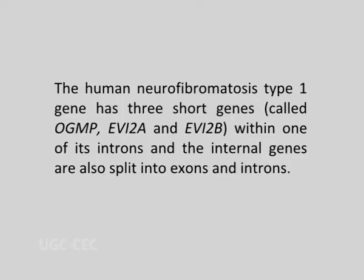For example, the human neurofibromatosis type 1 gene has three short genes called OGMP, EVI2A and EVI2B within one of its introns, and these internal genes are also split into exons and introns. Similarly, many non-coding small nuclear RNAs involved in chemical modification of other RNAs are also specified by genes within introns.